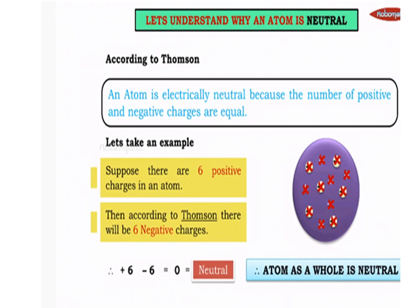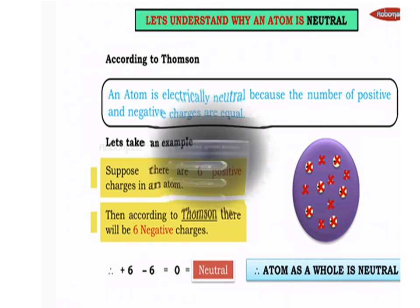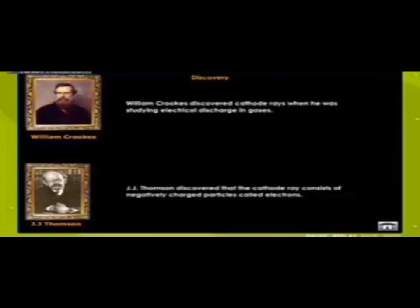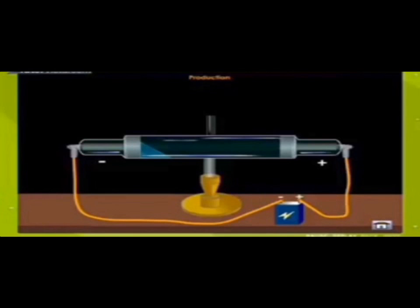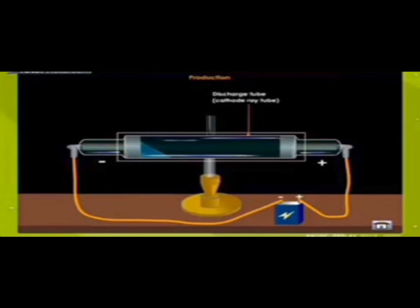The first person to tell us about equal positive and negative charges was none other than Sir J.J. Thompson. Now let us see the experiment of cathode rays and who discovered the electrons. William Crookes discovered cathode rays when he was studying electrical discharge in gases. Whereas J.J. Thompson discovered that the cathode rays consist of negatively charged particles called electrons.